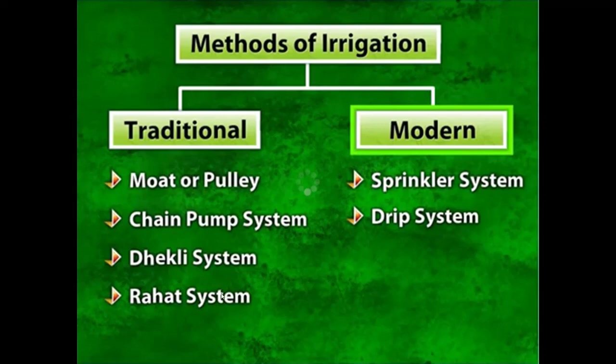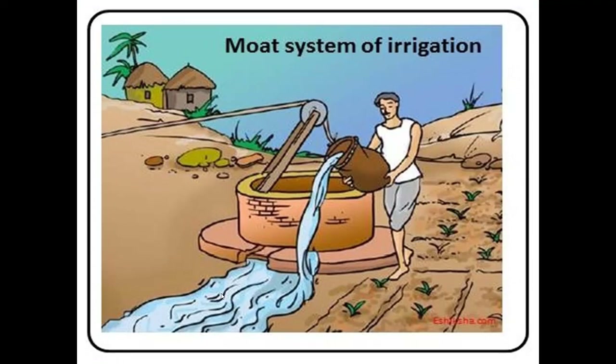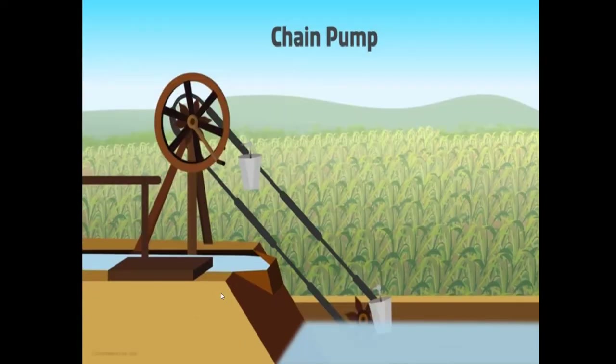In the traditional method, the farmer uses a mod or pulley system to pull water and supply it to the crops. In the chain pump system, water is collected using a chain and pump and supplied to the crop field.